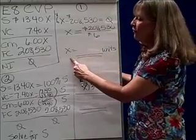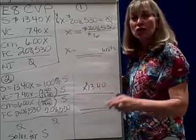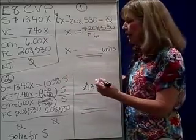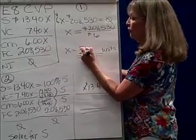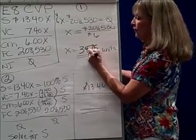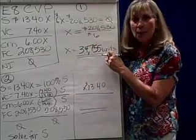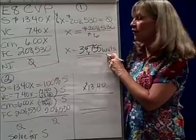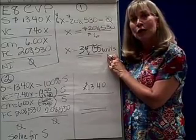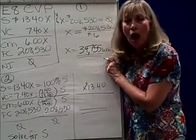And we find that x, the number of units you've got to sell to break even is 34,755 units. If I produce and sell 34,755 units, what will my profit be? Zero.